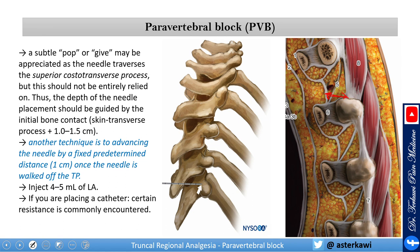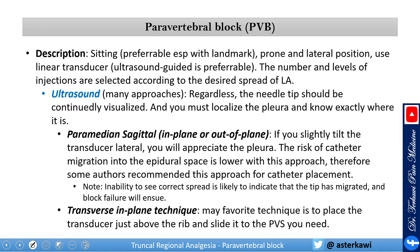For the ultrasound technique, you can perform it in either prone or lateral position. Generally, we have three approaches: two paramedian sagittal approaches — in-plane and out-of-plane — and one transverse approach, which is in-plane. The risk of catheter migration into the epidural space is lower with the paramedian sagittal approach than the transverse, so you may prefer it when inserting a catheter.